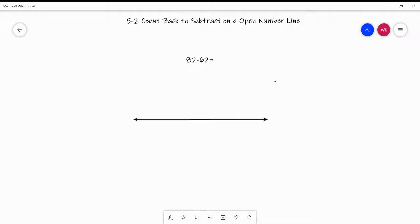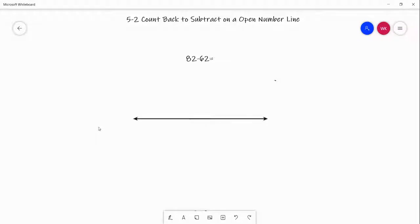Hello, we are going to go over lesson 5-2 today. In 5-1, we used hundreds charts to subtract. Now we are going to be subtracting on an open number line. Remember, an open number line means that there's no numbers on it. You can create that number line.